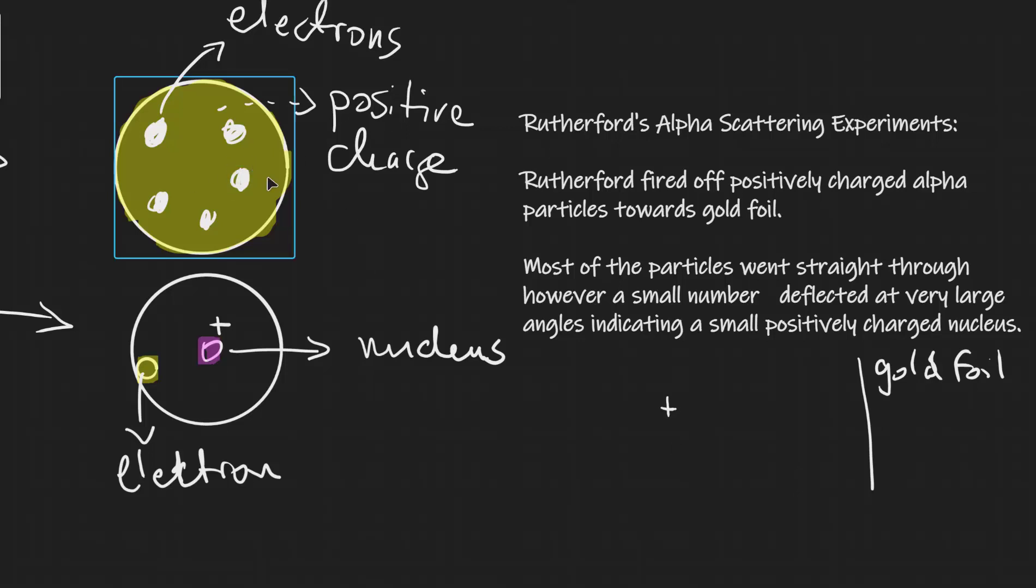If the plum pudding was correct, all the particles would have just gone through because they would have experienced on average the same force on all sides which would have cancelled out. However, this is not what Rutherford actually found out.